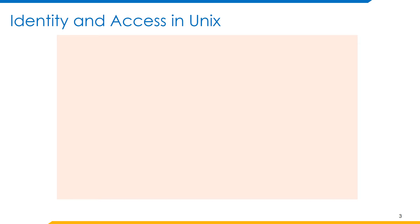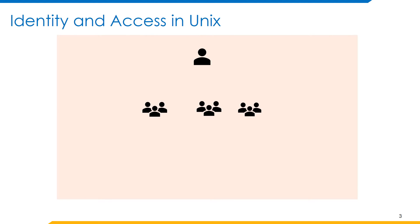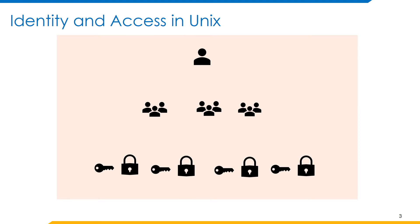Identity and access in Unix could be explained just like the identity and access in various applications. We might say that it works in three steps. As step one, we identify all the users or the identities. As step two, we group the identities as per the access required. As step three, we provide the access to these groups. We shall be exploring the identity and access in Unix in a very similar fashion.